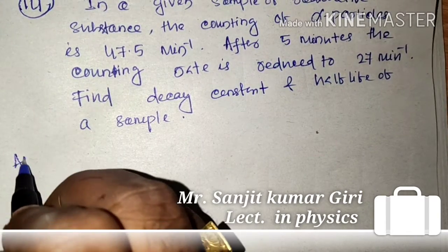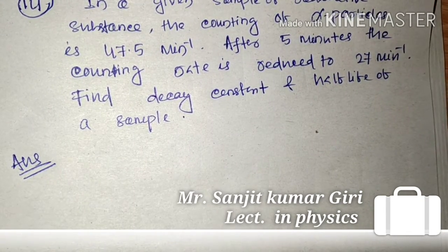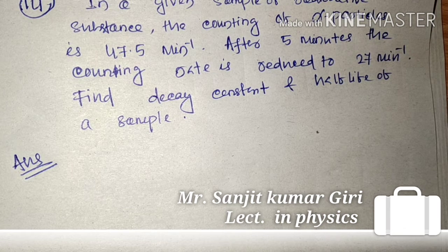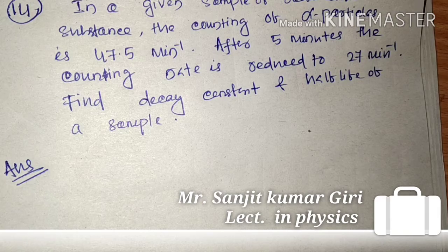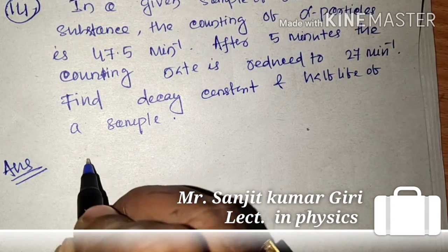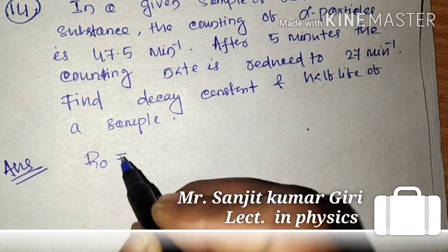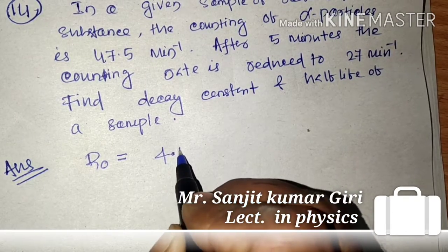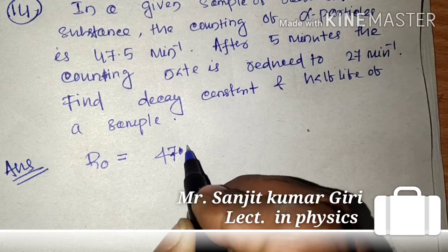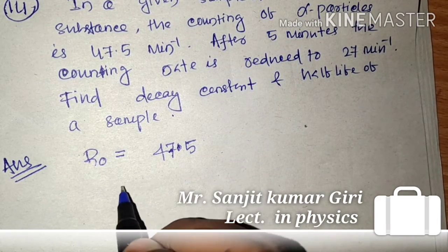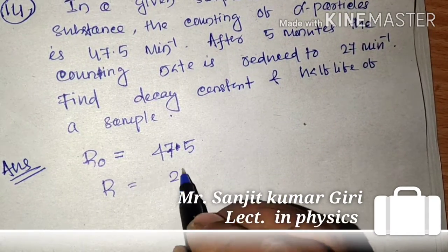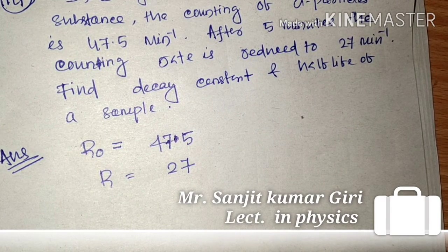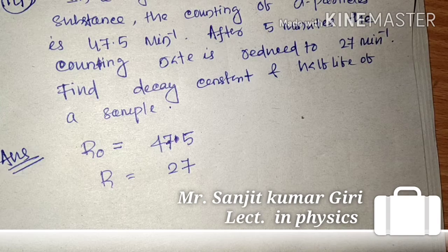So students, in the question, the data is, this is the R0, R0 is 47.5, and the R is 27. These are the activities.